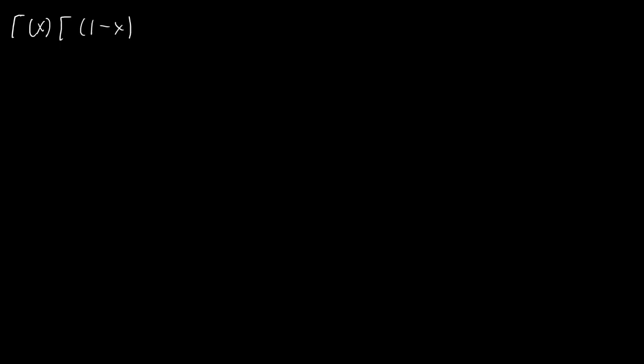First I'm going to list off some identities that we're going to be using. First off we have the reflection identity, which is that Γ(x) times Γ(1 − x) is equal to π csc(πx). We're going to be using that.